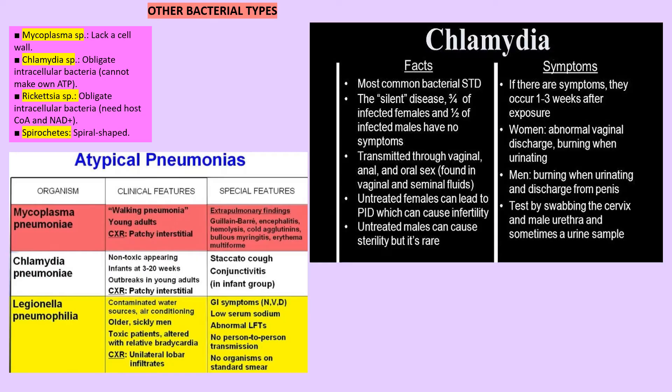Mycobacteria only take acid for staining because their cell wall has a mycolic acid waxy coating that prevents penetration of gram chemicals. Using carbolfuchsin stain, they stain red against a blue background. Mycobacterium tuberculosis carries the cord factor and is treated with multiple drug therapy: rifampin, isoniazid, pyrazinamide, and ethambutol. Testing includes PPD skin testing and sputum testing. Primary and secondary tuberculosis stages were discussed in pathology. Mycobacterium leprae causes leprosy in two forms: tuberculoid type and lepromatous type with foam cells.